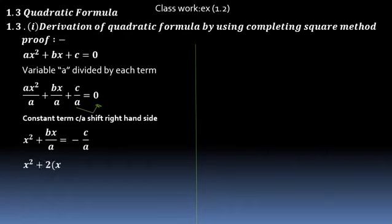So we have x² + bx/a = −c/a. We check completing square using the identity: a² + 2ab + b² = (a + b)². How can we add a term to get the perfect square?